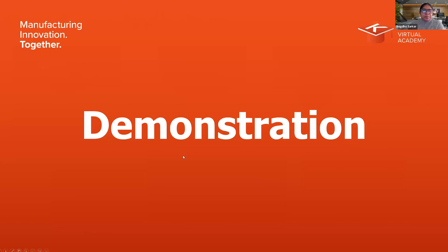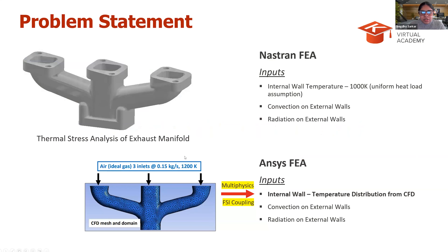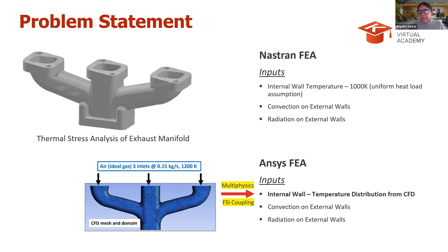Let's talk about the demonstration we're going to do. We'll do a very similar example to what Maddie did — the thermal stress analysis of this exhaust manifold. Maddie assumed an internal wall temperature, and you could also assume a constant heat load or heat flux on that surface for a qualitative understanding of how temperature is affecting stress levels. That might be sufficient for a design engineer looking to improve their design. But what if you want an analyst to get higher accuracy, higher fidelity results? In that case, will the assumption of constant wall temperature or wall flux be sufficient? Perhaps not.